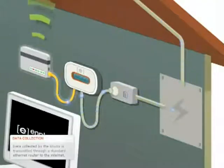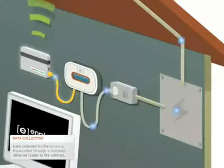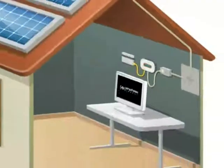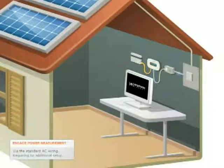Data collected by the Envoy Communications Gateway is then transmitted through a standard Ethernet router to the Internet. Again, this is done through the standard AC wiring, requiring no additional setup.